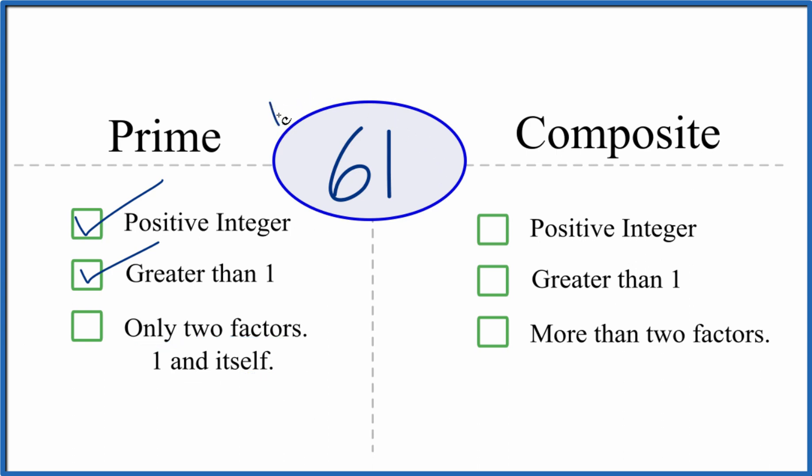So let's see, we know 1 times 61, that would equal 61. There's two factors, but are there any more factors that go evenly, divide evenly into 61? The answer is there are not.